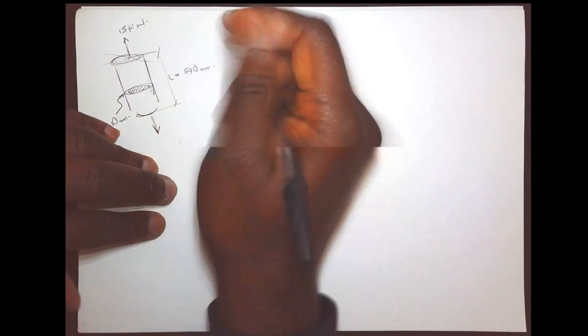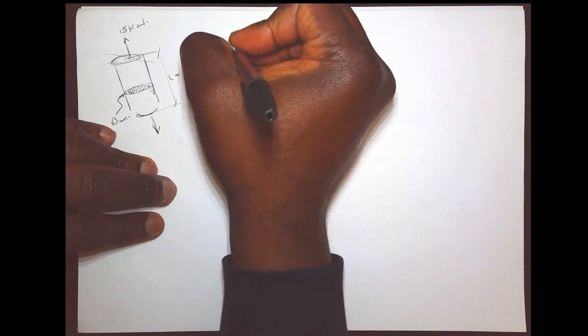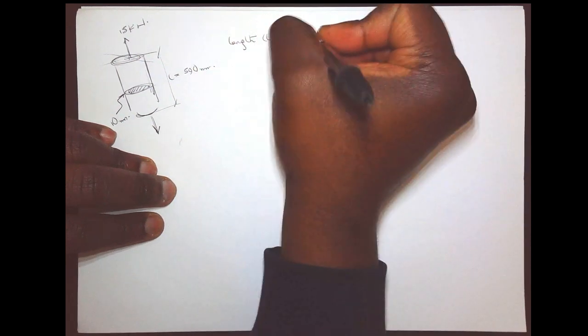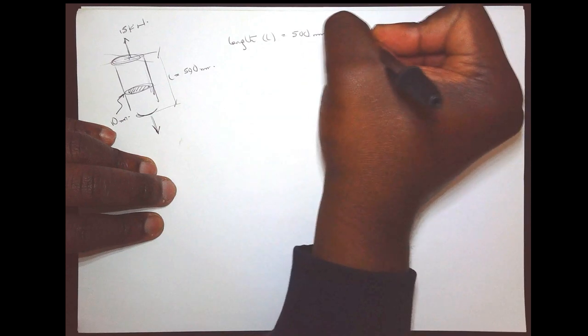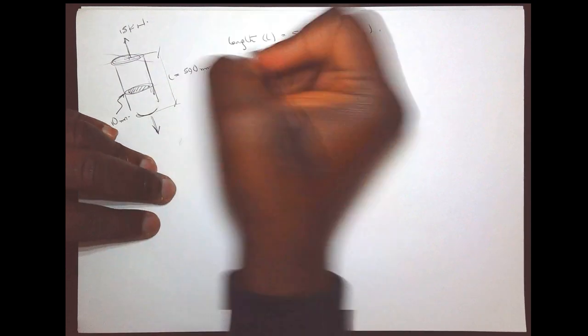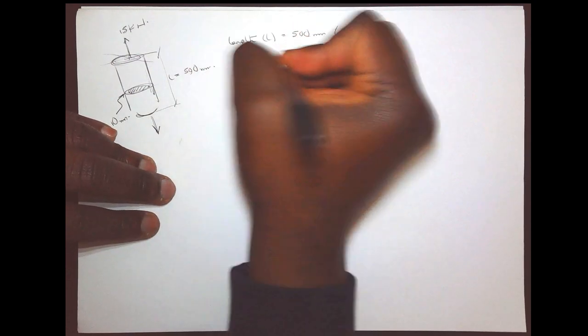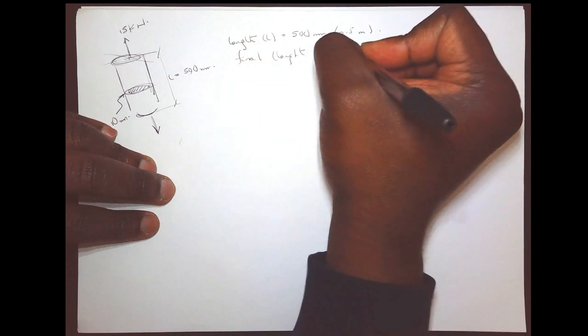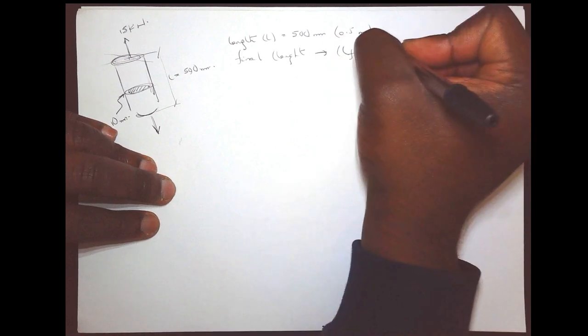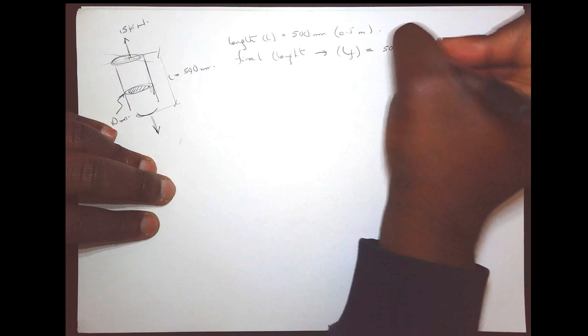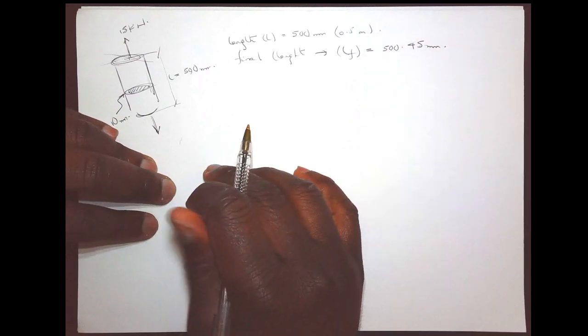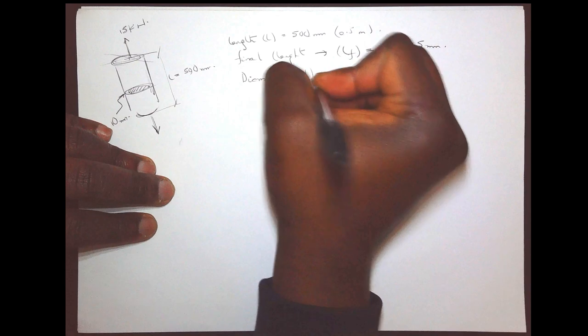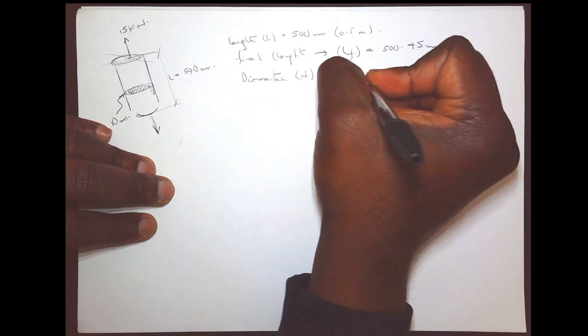So let's start. So what do we know from the problem? We know that the length L from the diagram is 500 millimeters. It's up to you if you want to convert that into meters. The final length L subscript F is given at 500.45 millimeters. We've been given the diameter D at 10 millimeters.